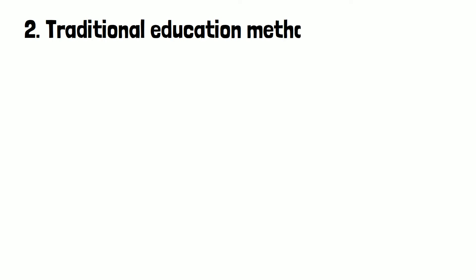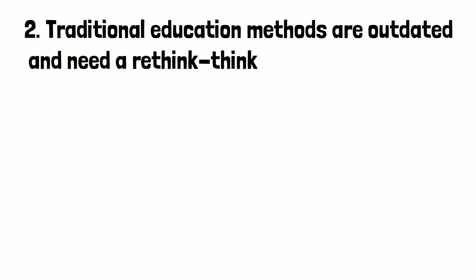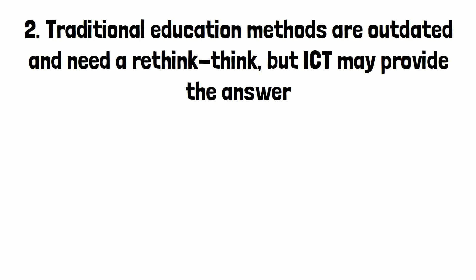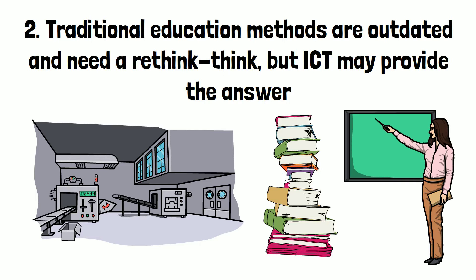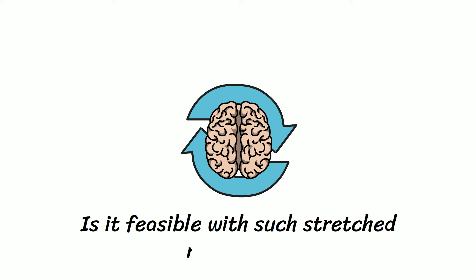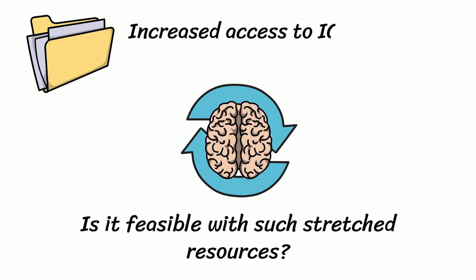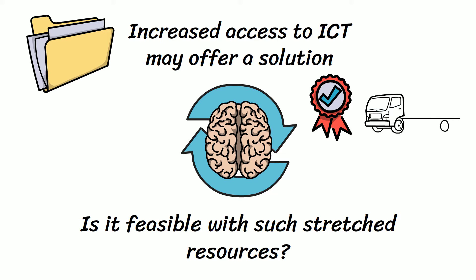Number 2. Traditional education methods are outdated and need a rethink, but ICT may provide the answer. The Industrial Revolution formed our current educational system, influencing not only what subjects were taught, but also how they were taught. Education needs a serious rethink, but is it feasible with such stretched resources? There is evidence to suggest that increased access to ICT may offer a solution.